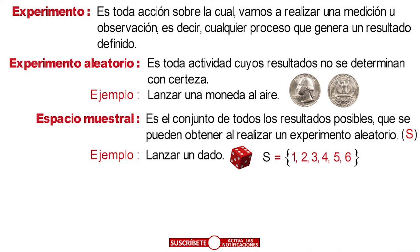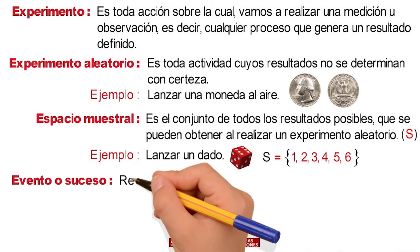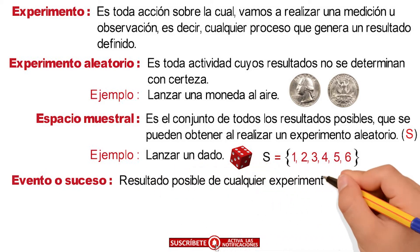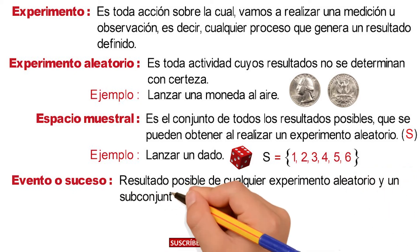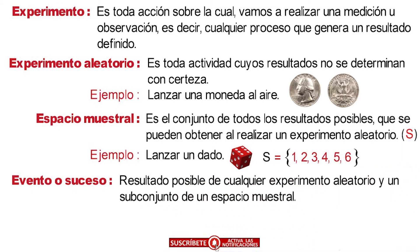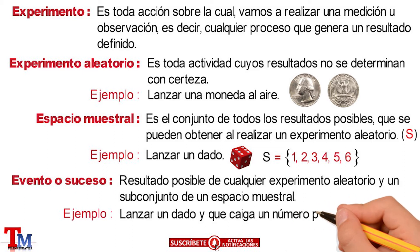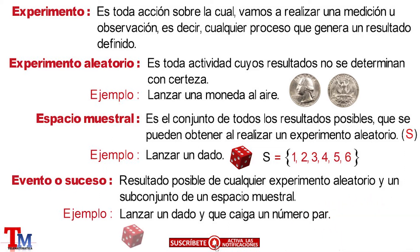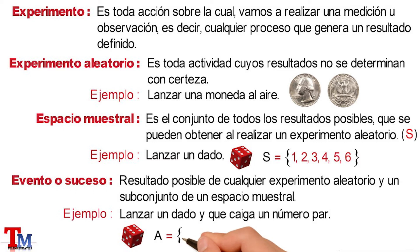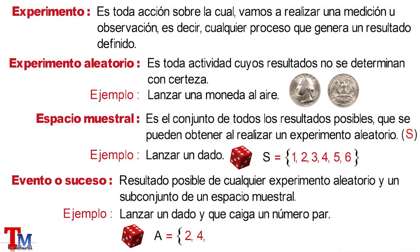En cuarto lugar, evento o suceso, que se define como el resultado posible de cualquier experimento aleatorio y un subconjunto del espacio muestral. Por ejemplo, lanzar un dado y que caiga un número par; tenemos un dado donde el evento representado con la letra A va a estar definido por los números dos, cuatro y seis respectivamente.